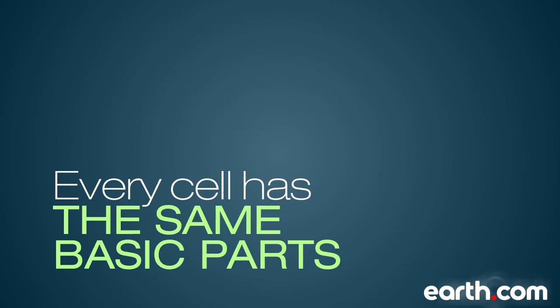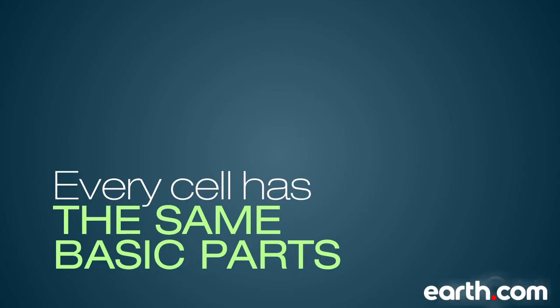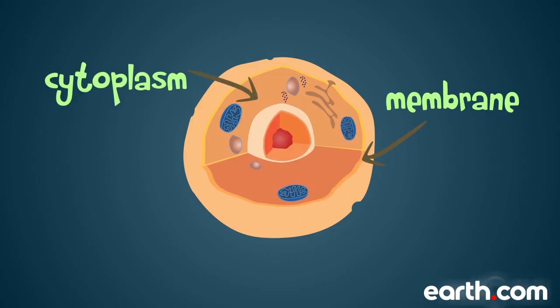However, every cell, no matter what its job, has the same basic parts. All human cells have an outer border that's the boundary of the cell, called the cell membrane. A liquid material called cytoplasm is inside the cell membrane and there's a large structure suspended in the cytoplasm called the nucleus.